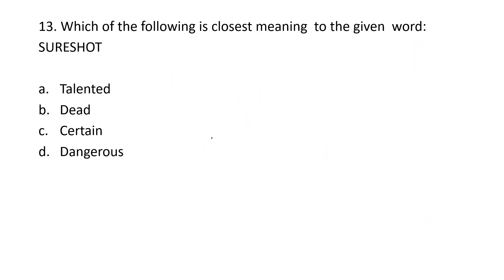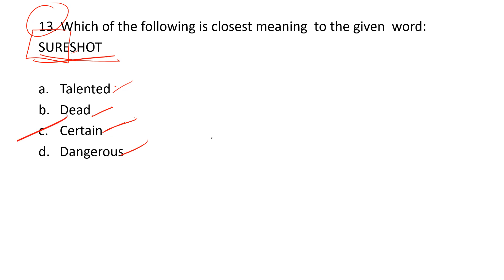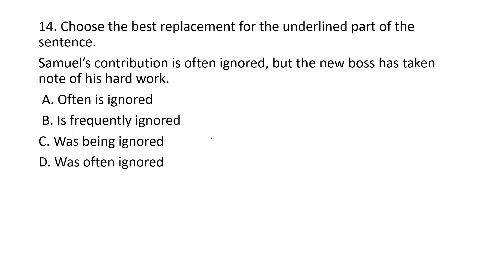The thirteenth question asks for the closest meaning to 'sure shot.' Even without prior knowledge, observing the options — talented, dead certain, dangerous — the word 'sure' within 'sure shot' gives a clear clue. 'Sure' means certain. So 'sure shot' means definitely or certainly something. Option C — 'dead certain' — is the correct answer.